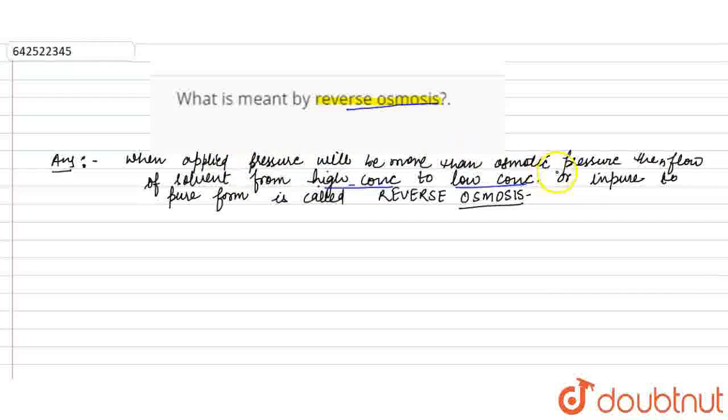So the flow of solvent is from high concentration to low concentration, or from impure to pure form, is called reverse osmosis. Now with the help of an example: